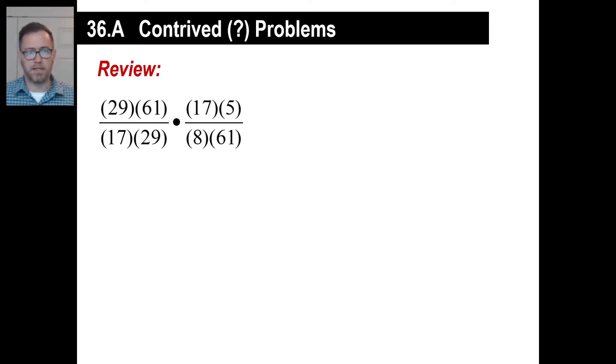But let's do a quick review. Look at this. What's the easiest way to deal with that arithmetic fraction problem? The easiest thing to do is just cancel, right? 29's gone, 17's gone, 61's gone. The answer? 5 eighths. Done. A lot simpler, right?